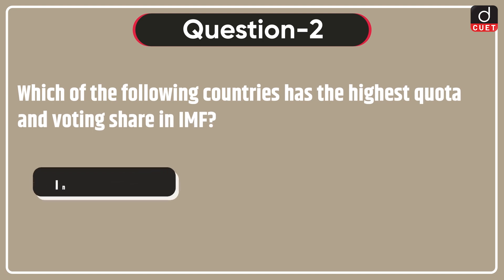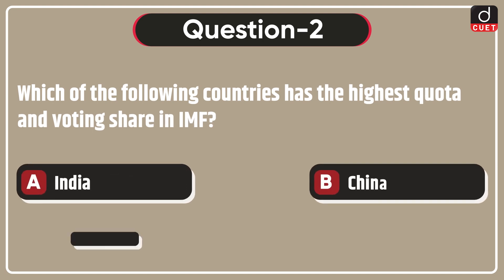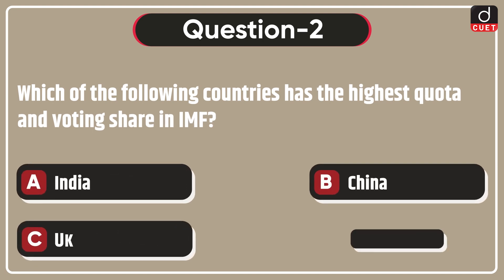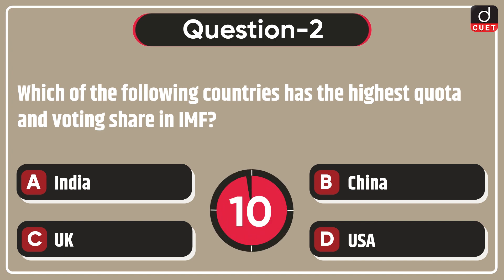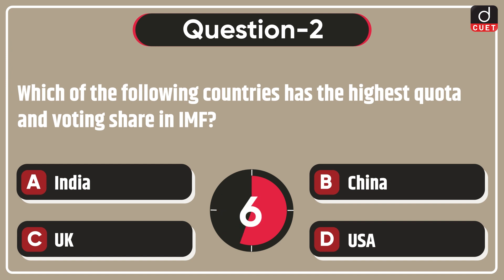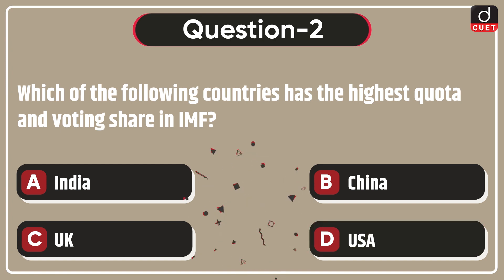Next question is, which of the following countries has the highest quota and voting share in IMF? India, China, UK, or USA? The correct answer is option D, USA.